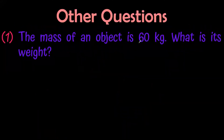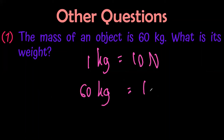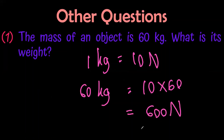The mass of an object is 60 kilograms. What is its weight? Since 1 kilogram equals 10 newtons, 60 kilograms equals 10 into 60, which means 600 newtons.